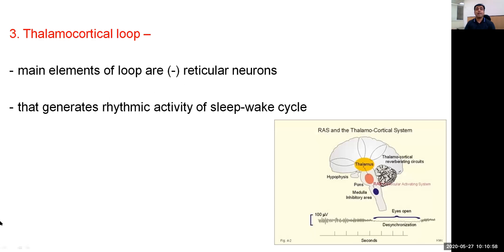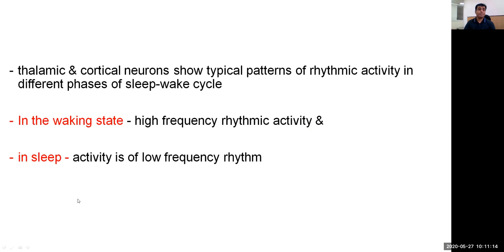Next is the thalamocortical loop. The main elements of this loop are inhibitory reticular neurons. As we can see, loops run from the thalamus to the cortex. These loops generate the rhythmic activity of the sleep-wake cycle. Thalamic and cortical neurons show typical patterns of rhythmic activity in different phases of the sleep-wake cycle. In the waking state there is high-frequency rhythmic activity from both thalamic and cortical neurons, whereas during sleep the activity is of low frequency.